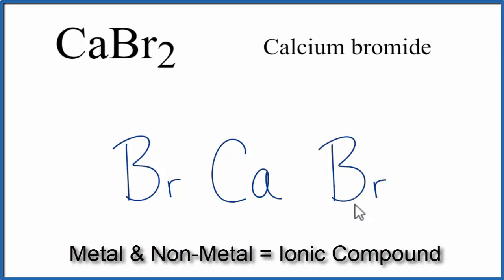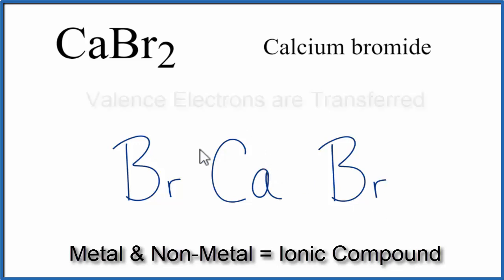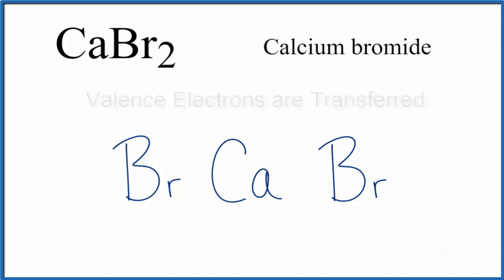In ionic compounds, valence electrons are transferred from the metal to the nonmetals. When we look on the periodic table, we can see calcium is in group 2, so it has two valence electrons.